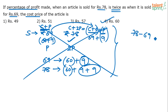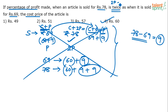When selling the product for 78 rupees, I'm getting 9 rupees extra compared to 69. That 9 rupees of extra profit is equivalent to the original profit p, because the second profit is 2p — that is p plus p. So the extra profit in the second case is p, which equals 9 rupees. Therefore original profit is 9, and since selling price 69 equals cost price plus 9, the cost price is 60 rupees. That completes the solution.